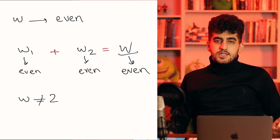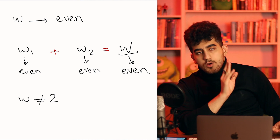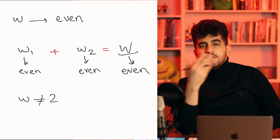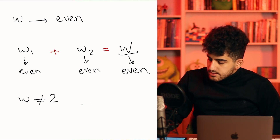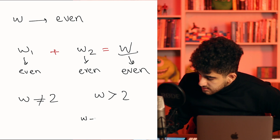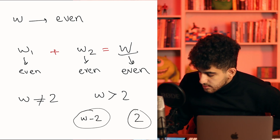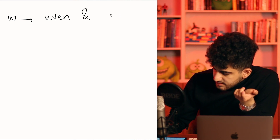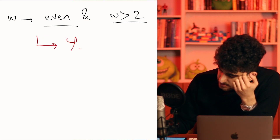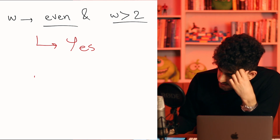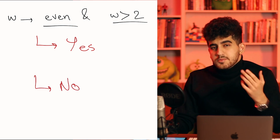Moreover, W cannot be 2, because the only way to divide 2 is 1 and 1, and those are not even. So W must be greater than 2. For any even W greater than 2, you can give W minus 2 to one boy and 2 to the other. So the answer is Yes if W is even and greater than 2, otherwise No.